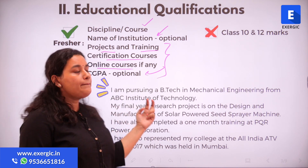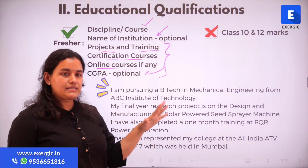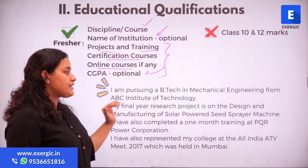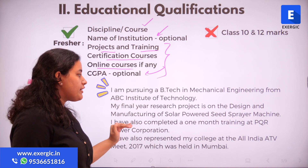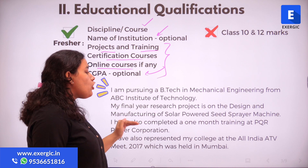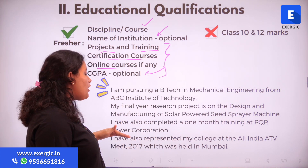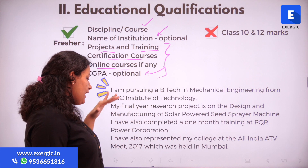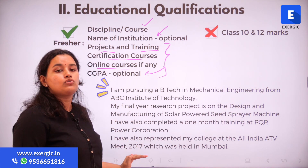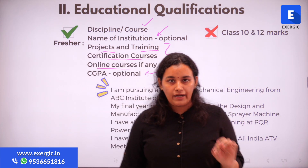Let's look at a sample example: 'I am pursuing a B.Tech in mechanical engineering from ABC Institute of Technology. My final year research project is on the design and manufacturing of a solar powered seed sprayer machine. I have also completed a one month training at PQR Power Corporation. I have also represented my college at the All India ATVB 2017, which was held in Mumbai.'